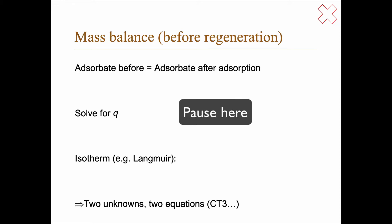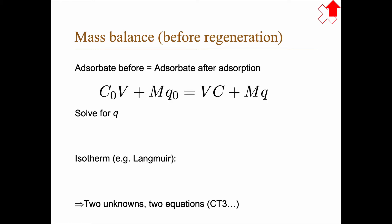Okay, did it work? What you should get is an equation like this: Before adsorption you have C₀V grams of adsorbate in solution and MQ₀ on the adsorbent. Afterwards you have VC in solution and MQ on the adsorbent. We can solve for Q and get Q = Q₀ + (V/M)(C₀ - C).